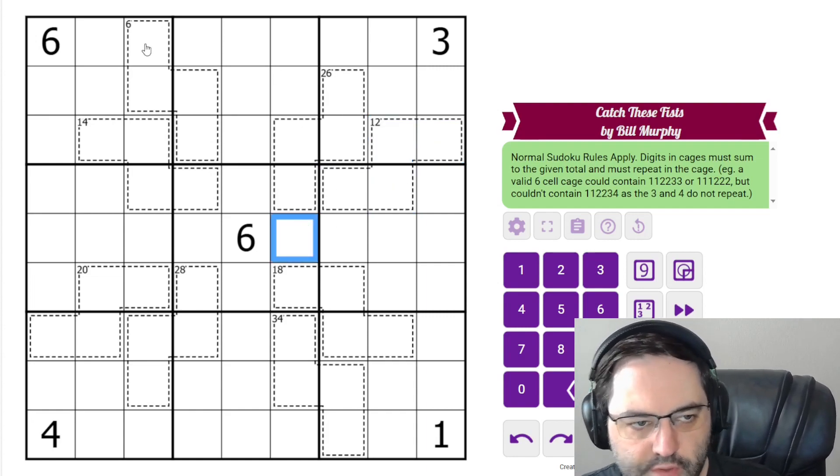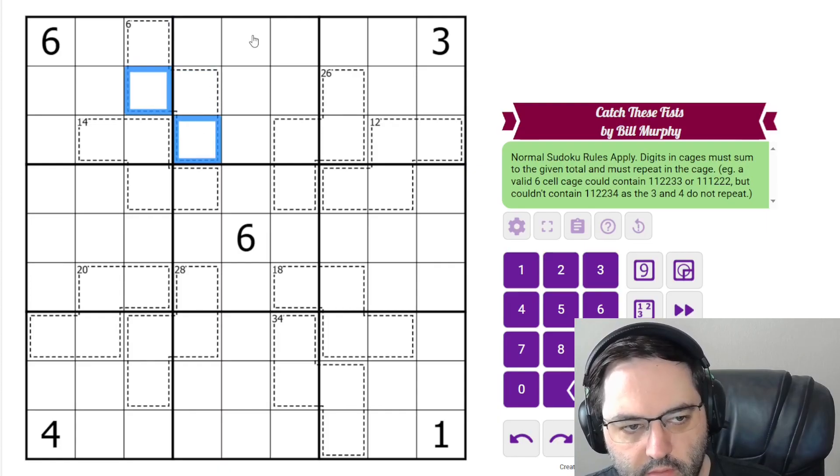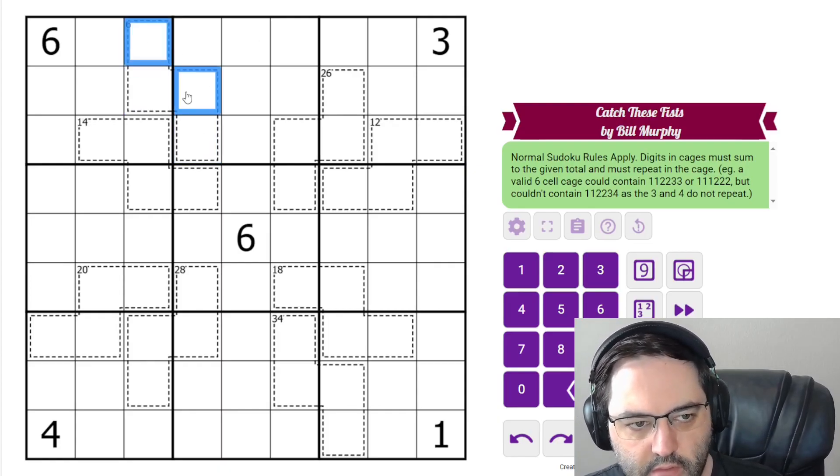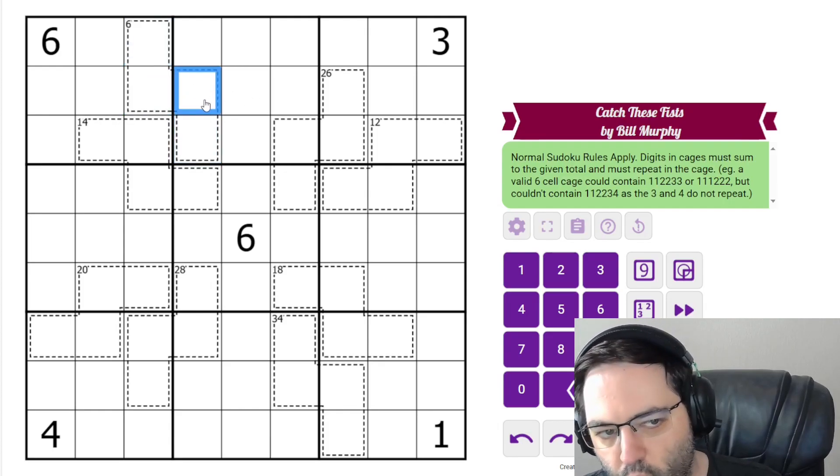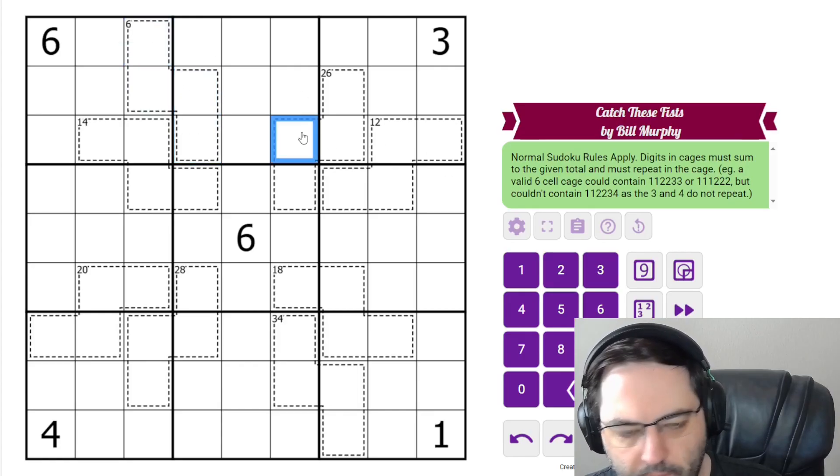Because all of these are four cell cages, we're going to have to have exactly two digits each repeated, and they're going to have to go in a pattern like that, because whatever this digit is can't go in these two cells. So it must go here. Those are the rules.